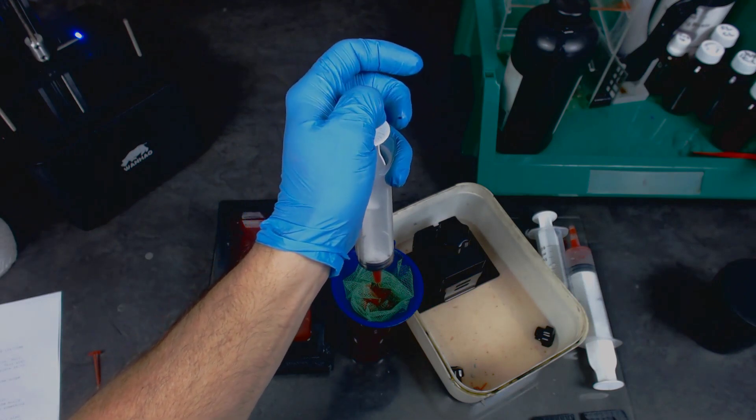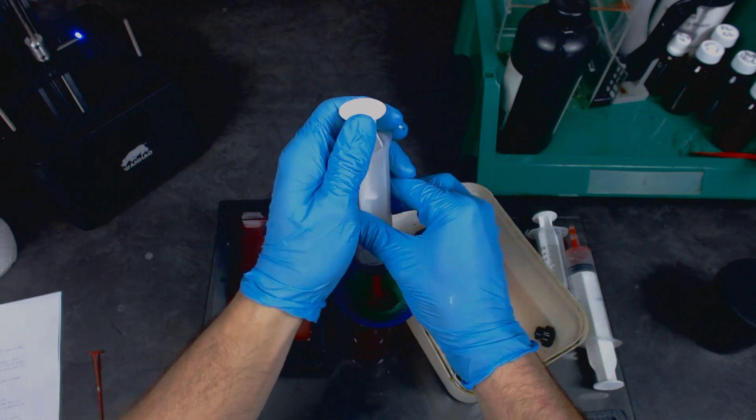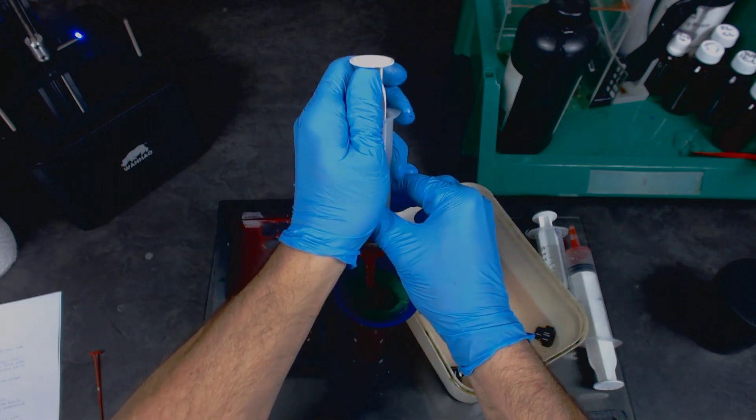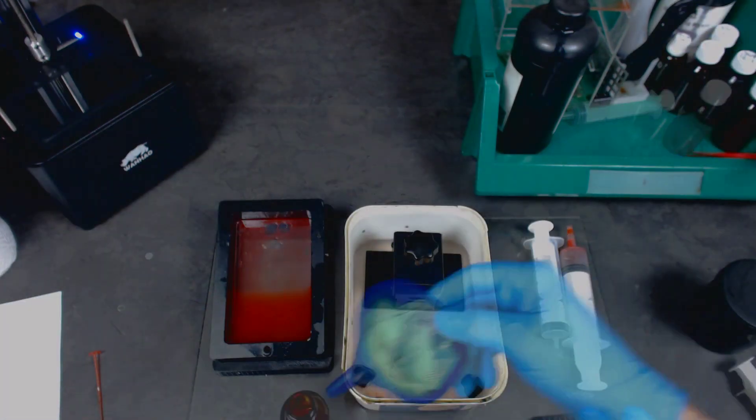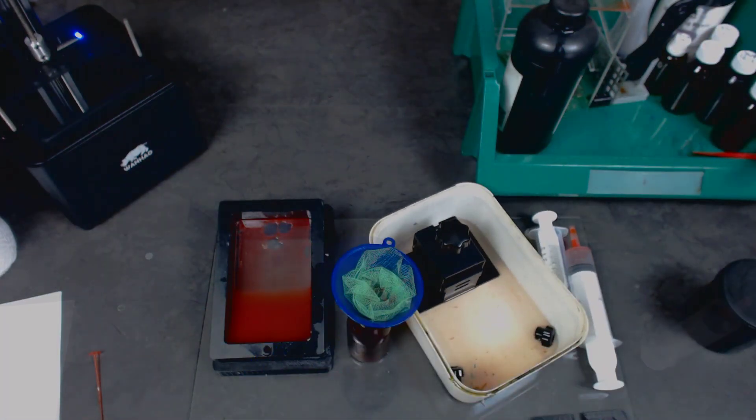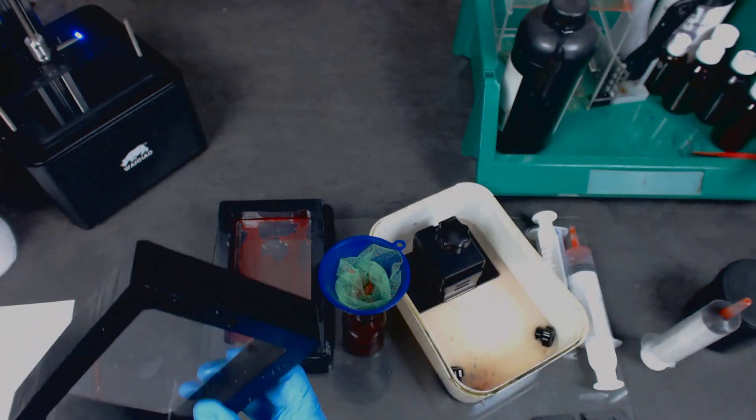The funnel is to filter out any gunk that's in the resin. I don't ever put used resin back into the original bottle to avoid contamination. I leave the resin to run down for as long as necessary to get as much of it out as possible.